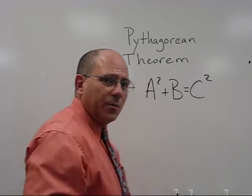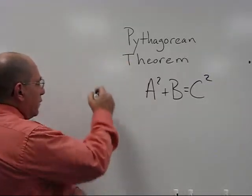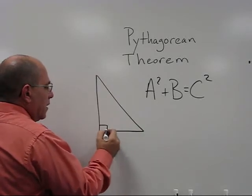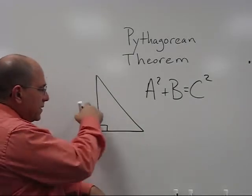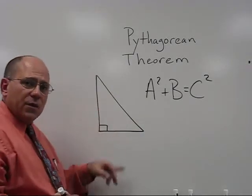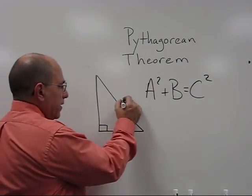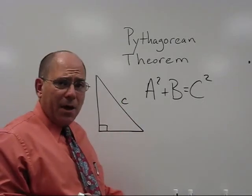Okay, before we get too overwhelmed, let me just draw a triangle here for you. We call these legs, and we label them A and B. This one right here is always called C and it's called the hypotenuse.